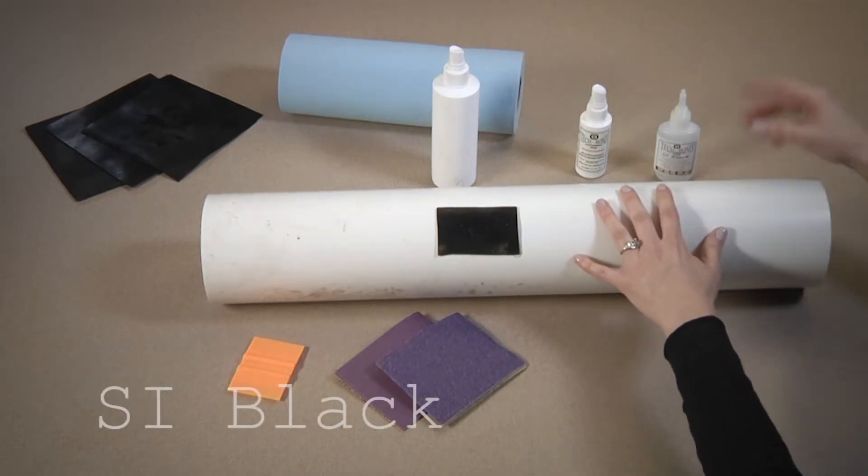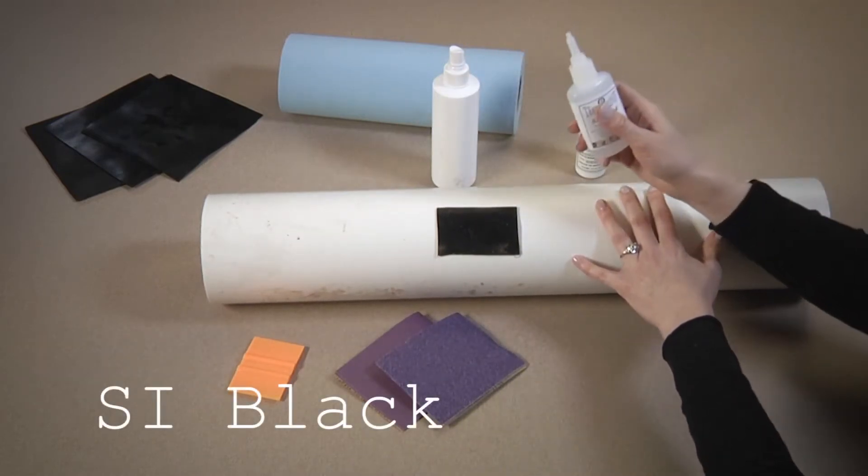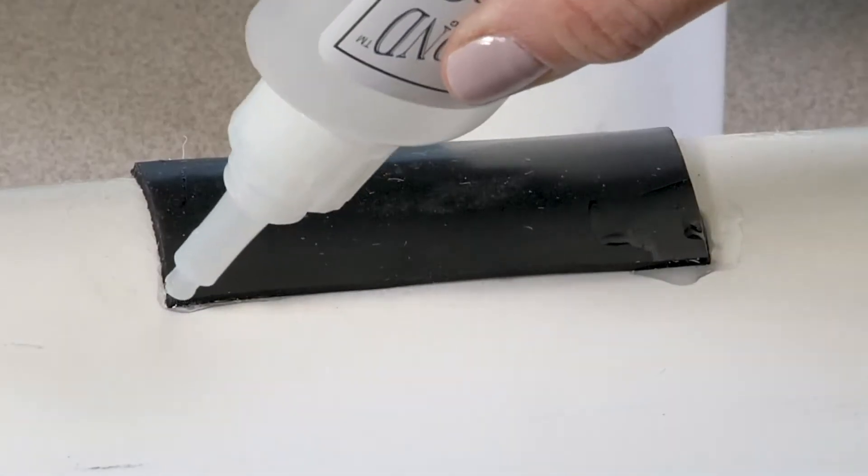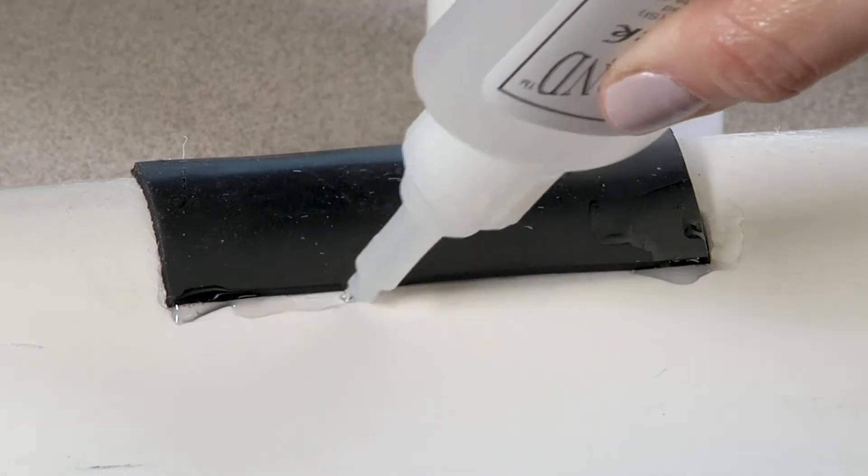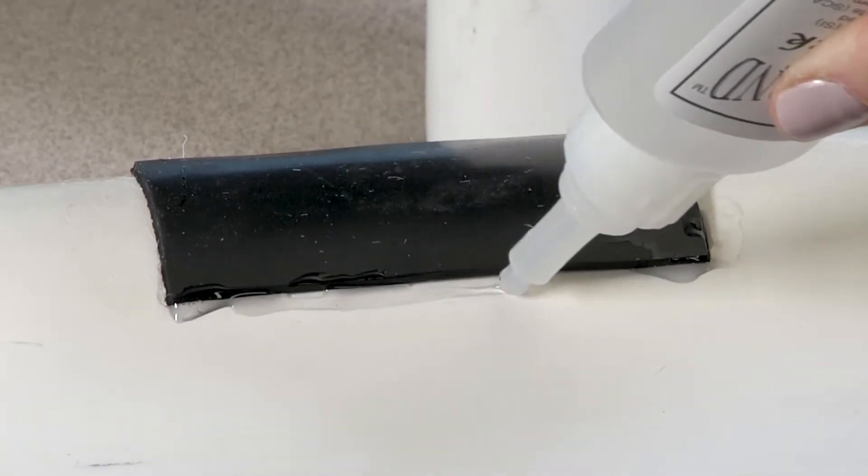Finally, we're going to apply a bead of SI Black to the entire perimeter of our patch. And we're going to make sure that we smooth it down with our nozzle.